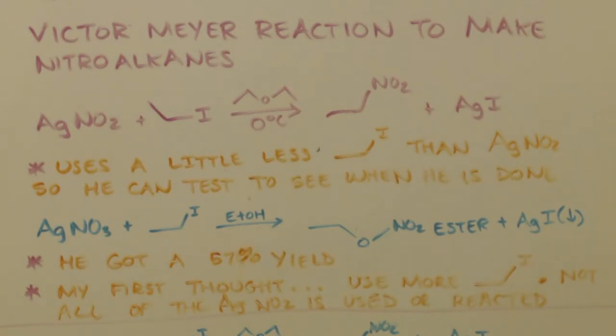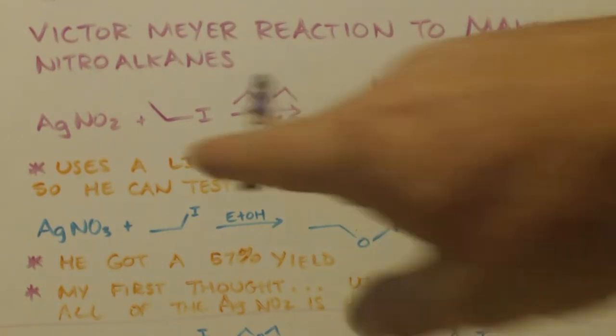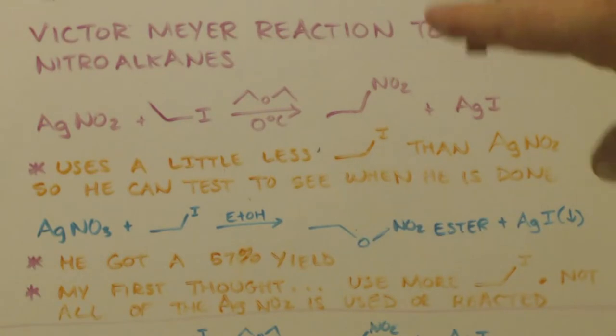I'm here to talk about the Victor Meyer reaction to make nitroalkanes. ChemPlayer already did a video on this, and I have the chemical equation up there because he used ethyl iodide, whereas I'm going to use ethyl bromide. You can see how it comes out. You're going to make some ethyl nitroethane, and the silver iodide will precipitate out. Simple reaction. You use diethyl ether as your solvent.